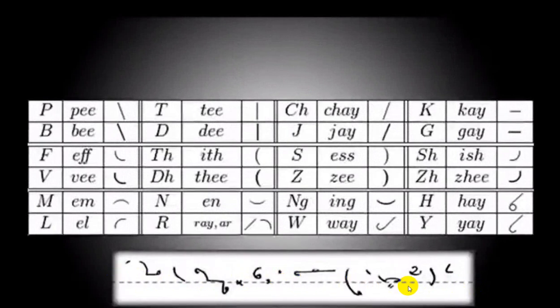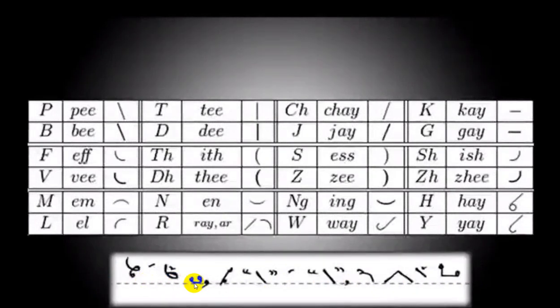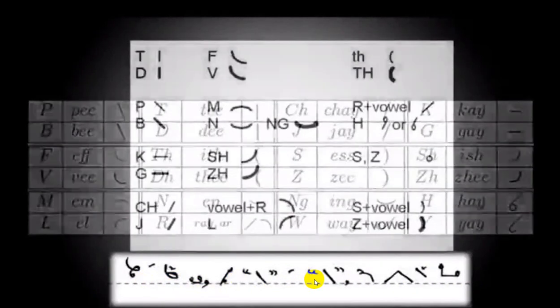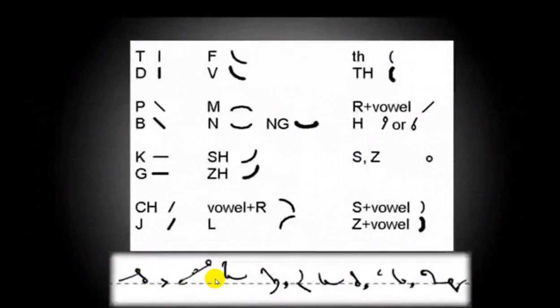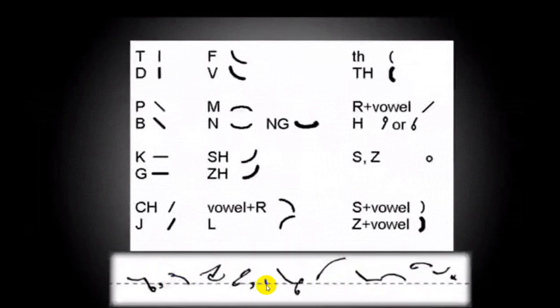Thus, a characteristic feature of Pitman's shorthand was that voiceless and voiced sounds, such as P and B, were represented by strokes that differed only in thickness. Doing this required a writing instrument which was responsive to the user's drawing pressure. Fountain pens with fine, flexible nibs were originally used, but pencils later became more common.